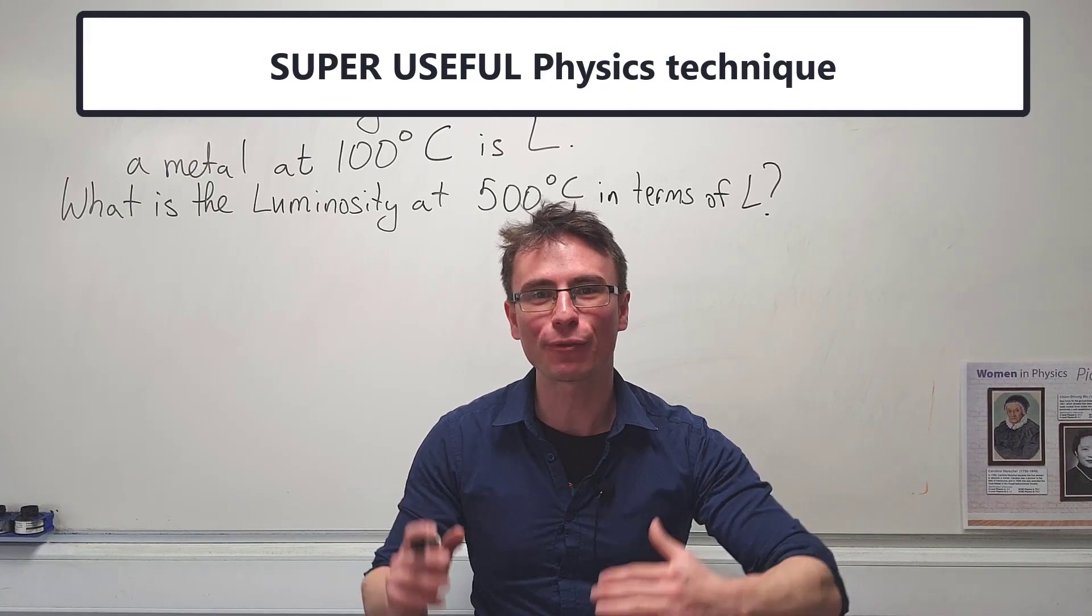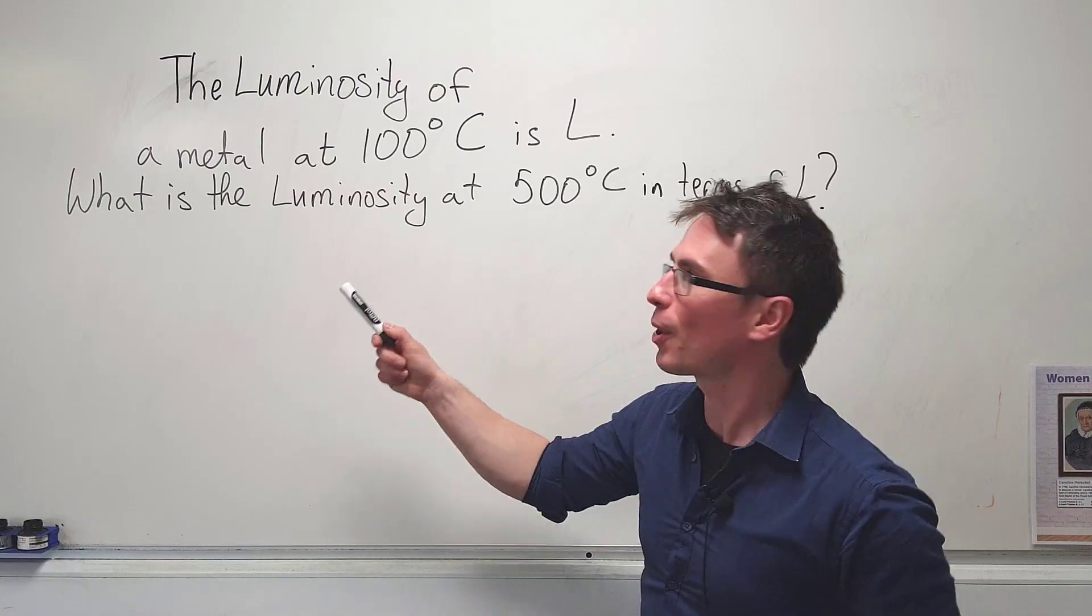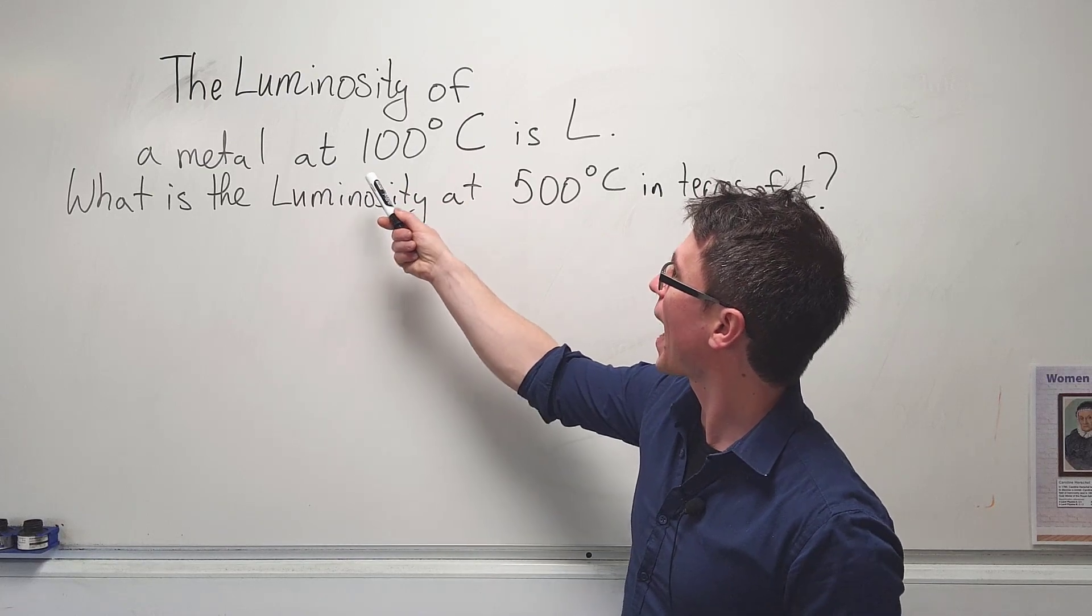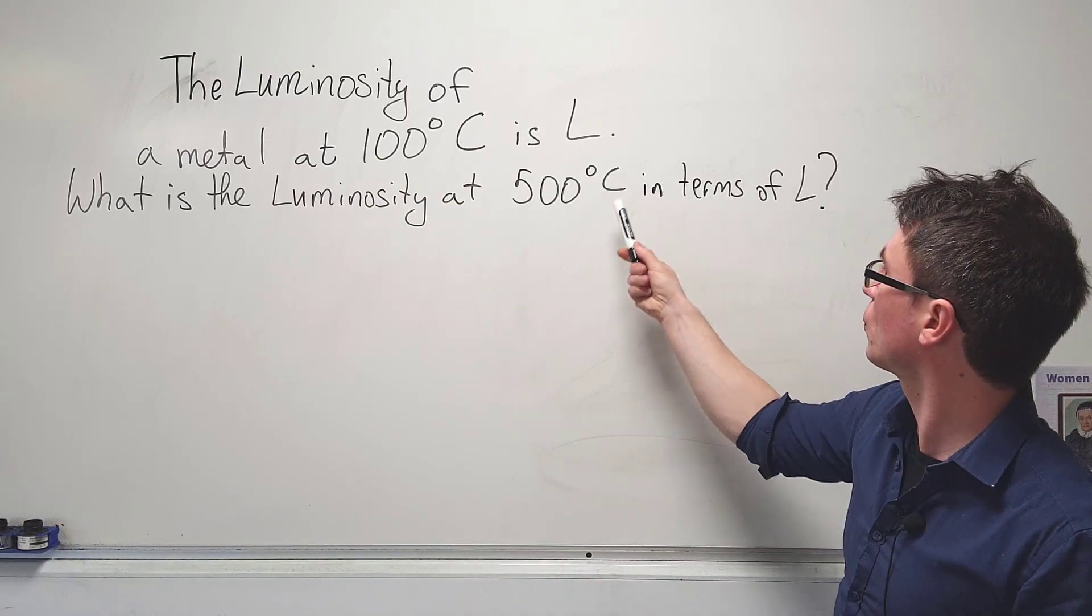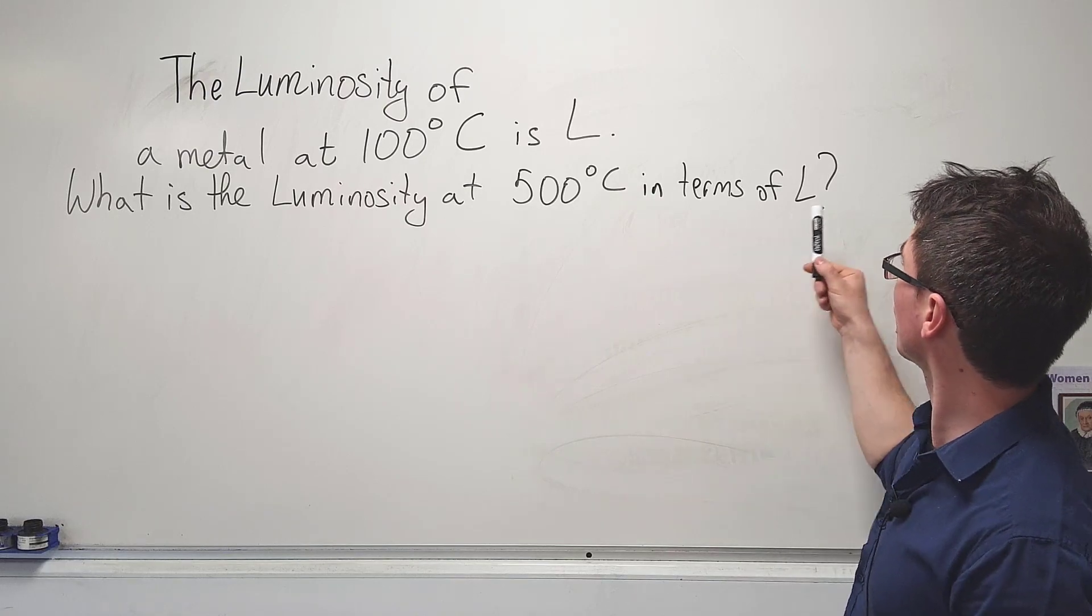Here's an incredibly useful technique for physics exams. Let's have a look at this problem. The luminosity of a metal at 100 degrees C is L. What is the luminosity at 500 degrees C in terms of L?